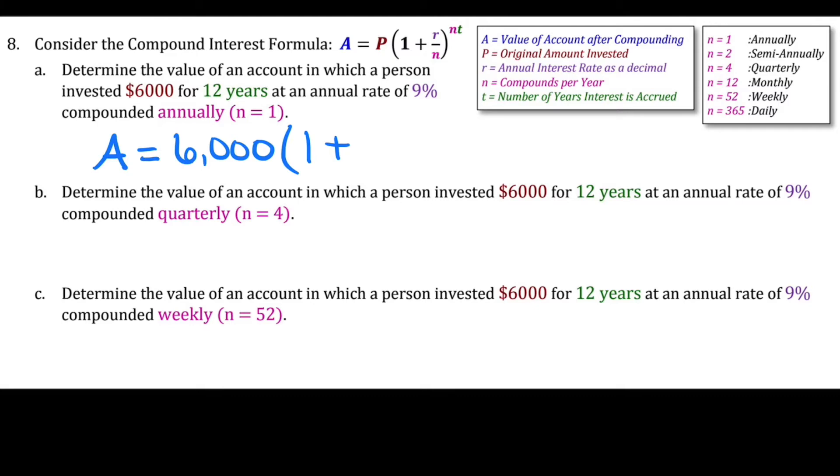The rate is .09 as a decimal, divided by the number of times compounded, which is 1, all raised to the power of 1 times 12 years. Plugging this into my calculator gives us approximately $16,875.99.